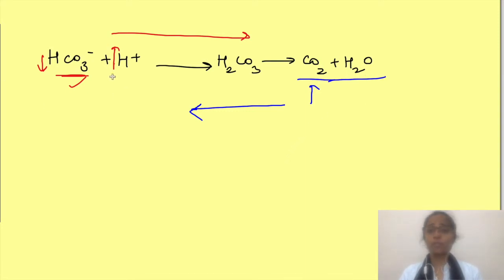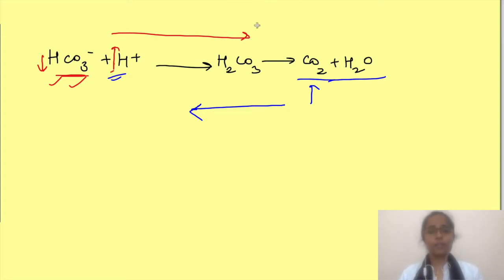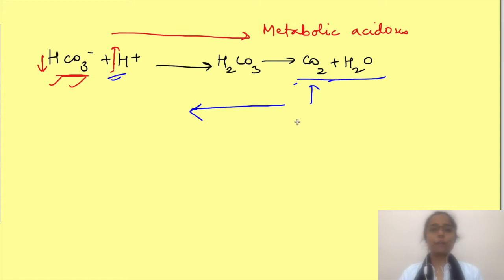So based on which side the reaction is proceeding, we define two types of acidosis. The first is where bicarbonate is being used up or its concentration is decreasing due to addition of non-volatile acids — this is known as metabolic acidosis. While in the other, the partial pressure of carbon dioxide is increasing — this is known as respiratory acidosis.